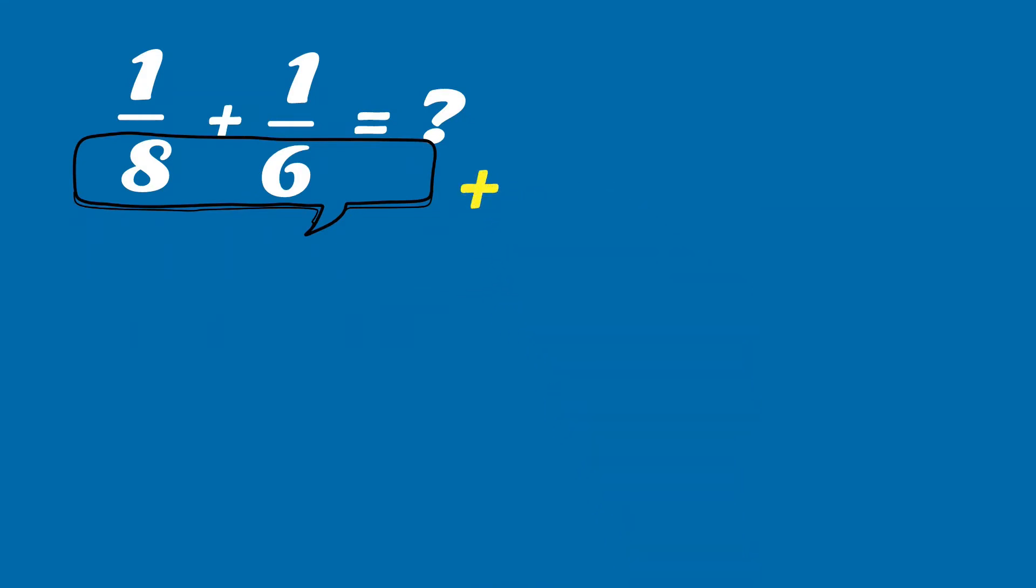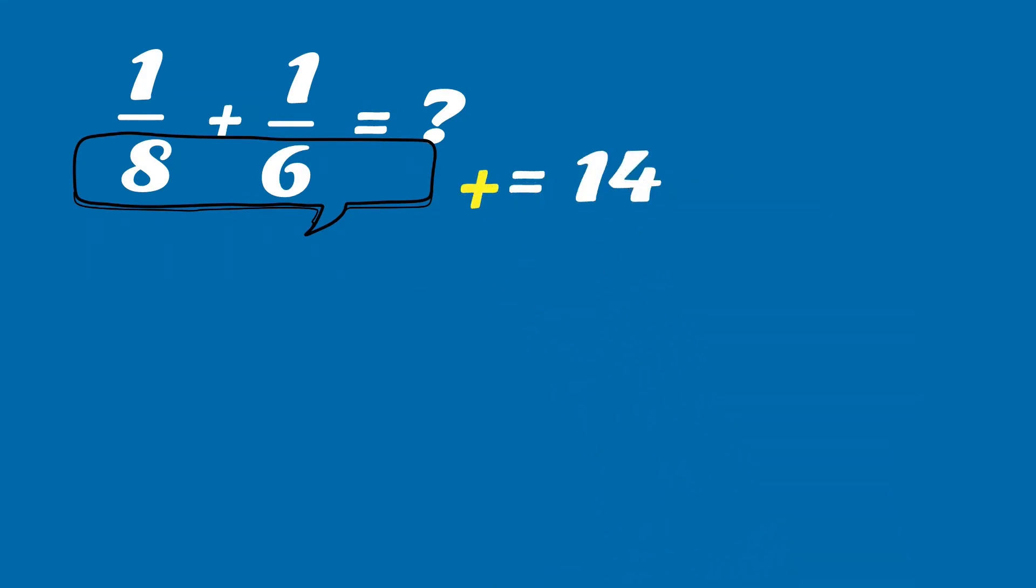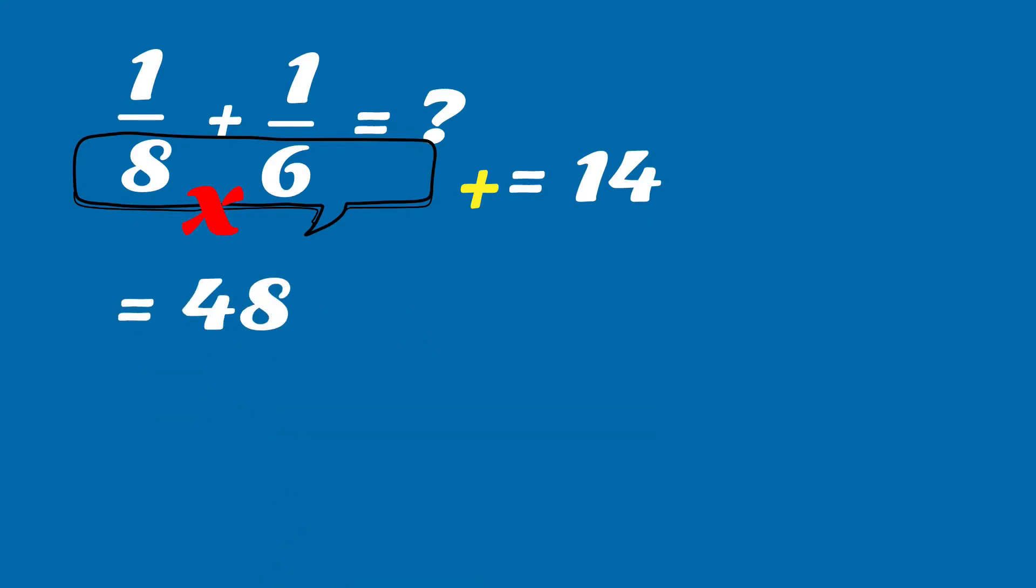Here instead of taking LCM, you can use this shortcut method. If you add these two denominators, you will get 14 as numerator and if you multiply them, you will get 48 as the denominator.